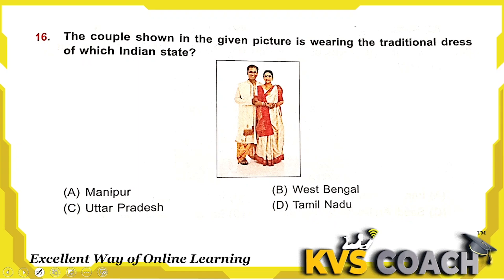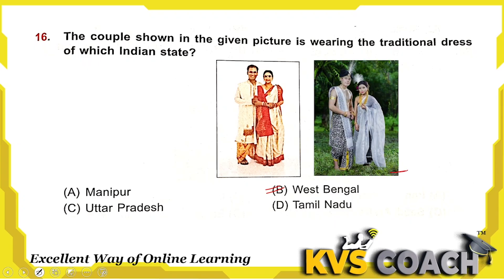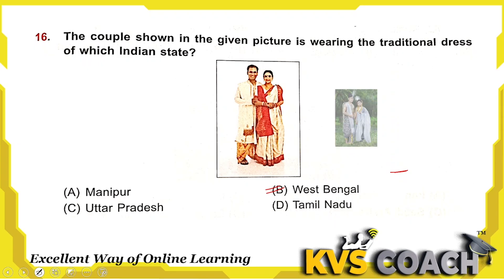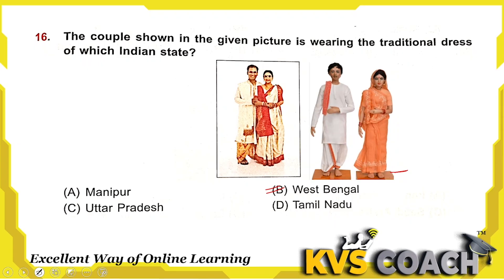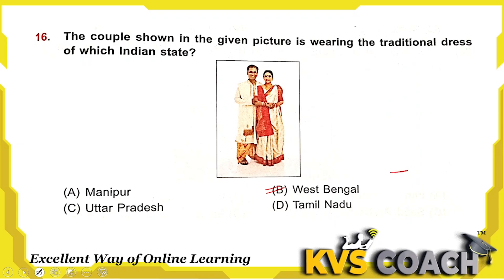Next: the couple shown in the picture is wearing the traditional dress of which Indian state? Option A shows West Bengal's traditional dress. Option B is the right answer for this dress. Manipur's traditional dress is also shown. Option C is Uttar Pradesh's traditional dress, and the last is Tamil Nadu's traditional dress. The right answer is West Bengal's traditional dress — option B.